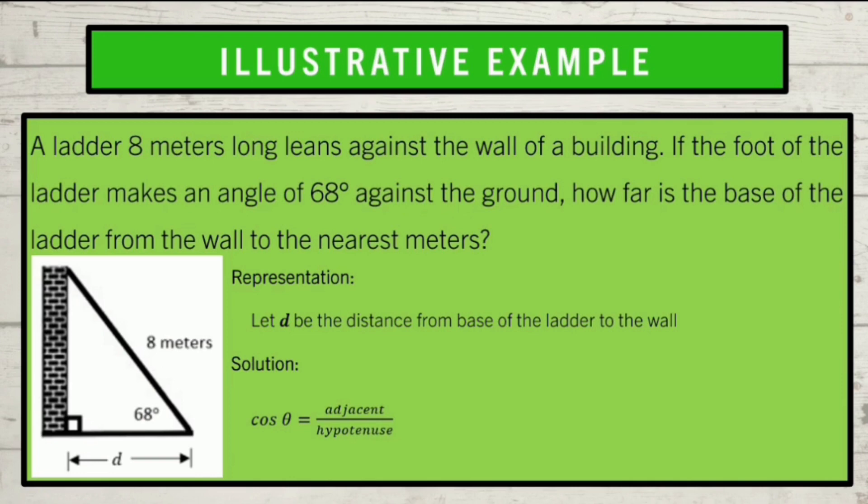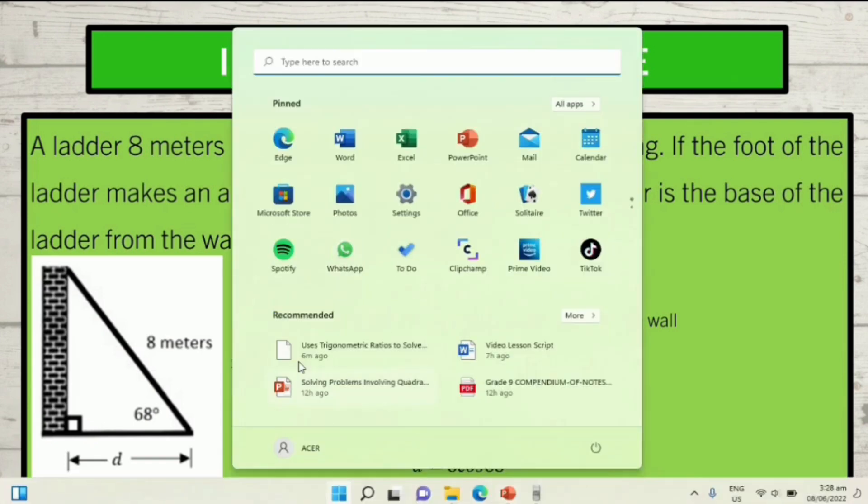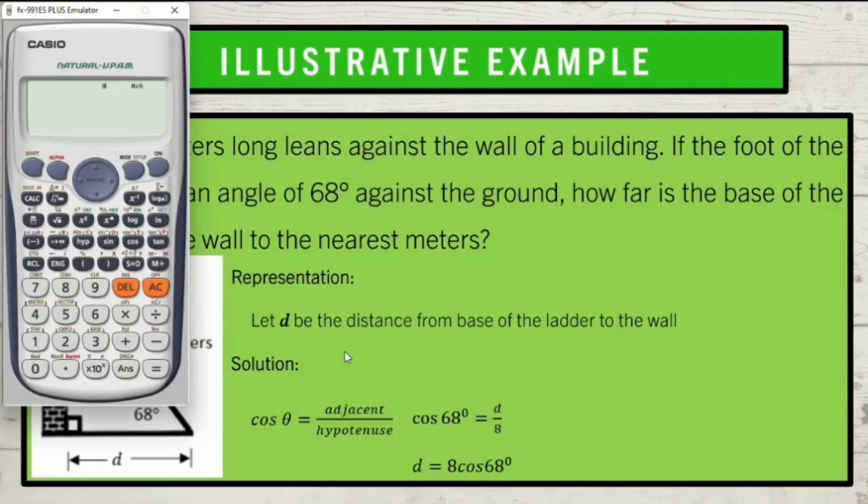For the solution, we substitute theta with 68 degrees, the adjacent side with d, and the hypotenuse as 8 meters. By cross multiplication, we have now d equals 8 multiplied by cosine 68 degrees. With the use of calculator, we're going to type 8 cosine 68 and close parentheses. Click equal, and we found that d is equal to 2.99 or 3 meters when rounded off to the nearest whole number.